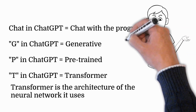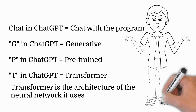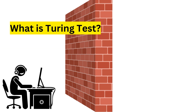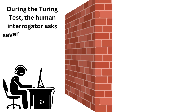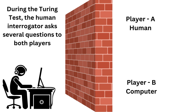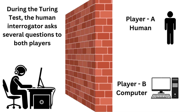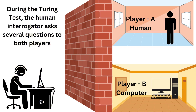Let's delve into a fascinating concept known as the Turing Test, proposed by British mathematician and computer scientist Alan Turing in 1950. This test is designed to measure a machine's ability to exhibit intelligent behavior equivalent to, or indistinguishable from, that of a human. In a typical Turing Test scenario, a human evaluator engages in a text-based conversation with both a machine and another human without knowing which is which. If the evaluator cannot reliably tell the machine from the human, the machine is said to have passed the Turing Test.